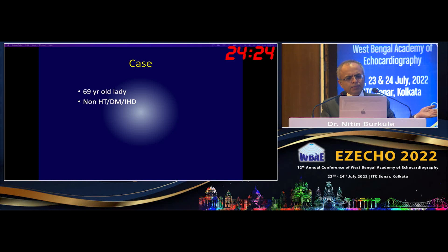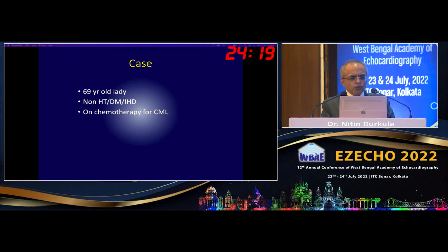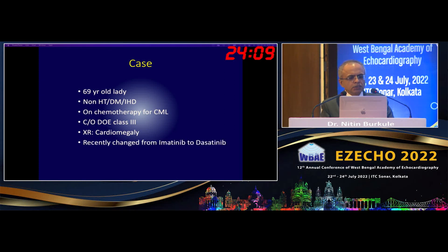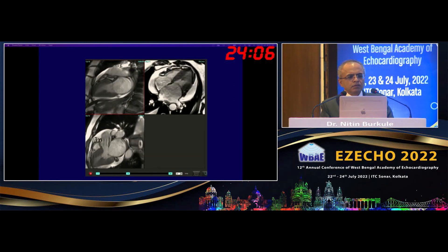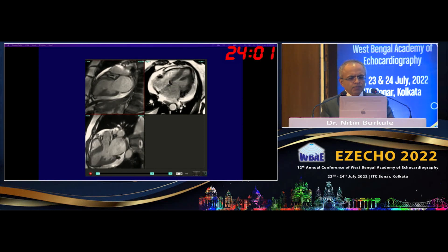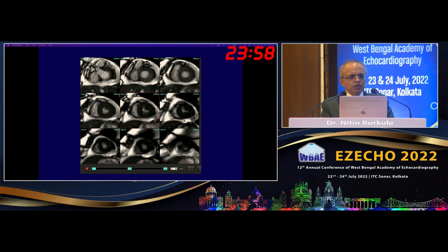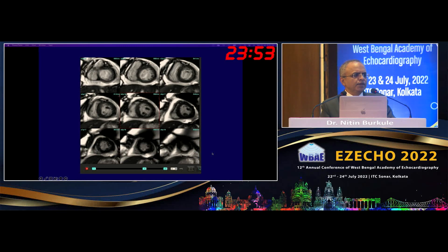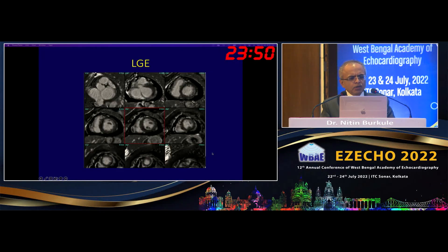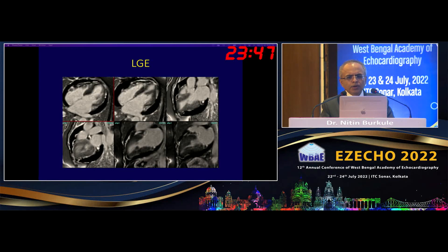This is a 69-year-old lady, non-hypertensive, non-diabetic. She's on chemotherapy for chronic myeloid leukemia and complains of grade 3 dyspnea at rest. X-ray shows cardiomegaly. She was on imatinib which was resistant, so she was changed to dasatinib. On MRI, there is perfectly normal LV function, but just look around it — there is a huge pericardial effusion. LV and RV function are all fine.